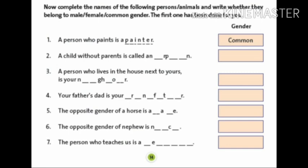Number 3. A person who lives in the house next to yours is your neighbor, common gender. Fourth sentence is, your father's dad is your grandfather, and the gender is male.